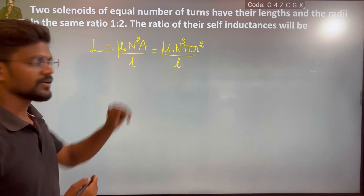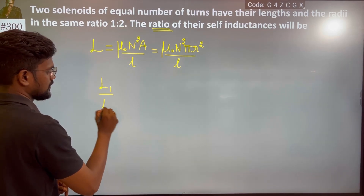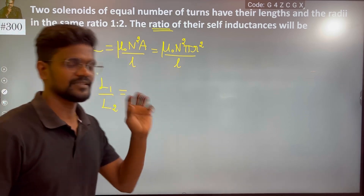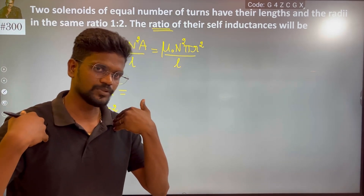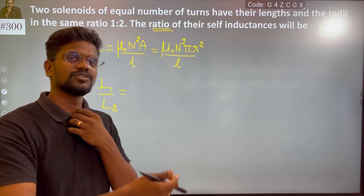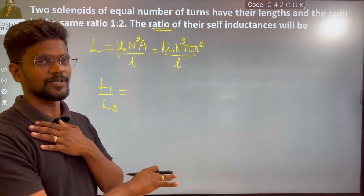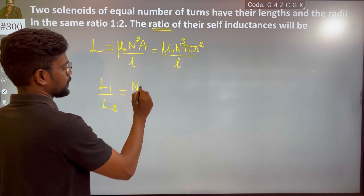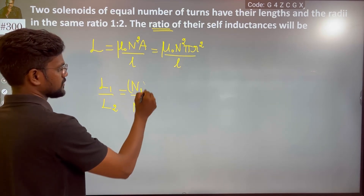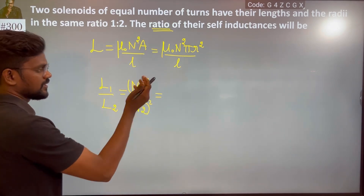We are talking about two solenoids and they are asking about the ratio, so L1 and L2. Mu naught and pi are constant, so we focus on number of turns, length, and radius. N is directly proportional, and it is a squared term, which is equal to N times radius.